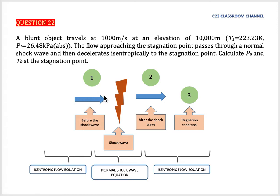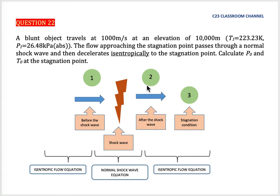So, we have flow at condition number 1, then the shockwave occurs, and then the flow is still moving at point number 2. After that, the flow will stop and have a stagnation condition. What I want to share with you is that to calculate before and after the shockwave, we must use the normal shockwave equation. For all things that happen before the shockwave and also the flow condition after the shockwave at point 2 and point 3, we could use the isentropic flow equation.